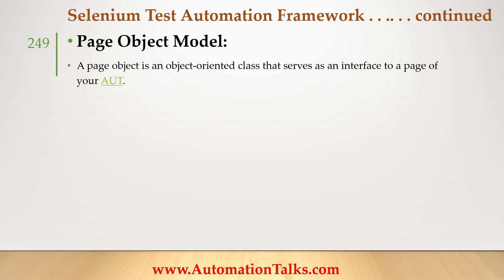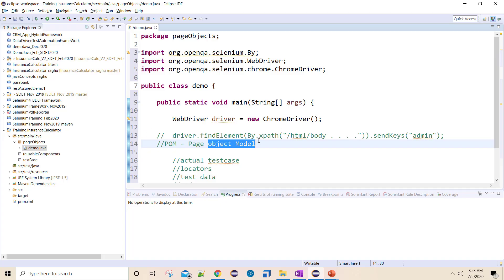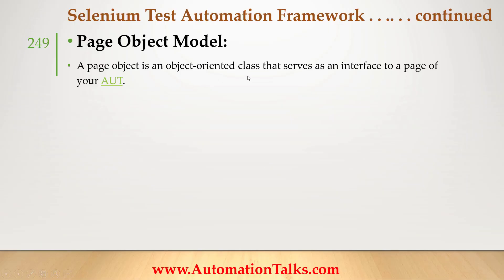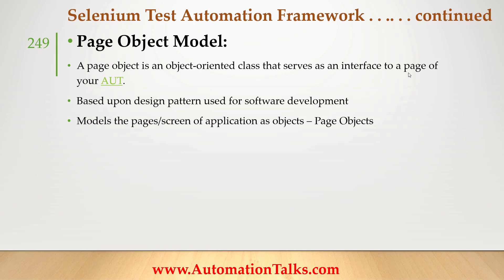What is a page object? A page object is an object-oriented class that serves as an interface to the pages of your AUT. Locators are used to identify page objects - in my page I will have some dropdowns, radio buttons, text fields, buttons and so on. Page object model defines how those page locators connect from your page to actual test cases, based on the design pattern used for software development.